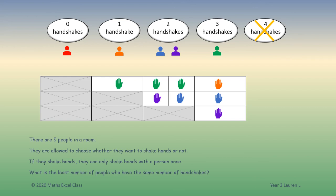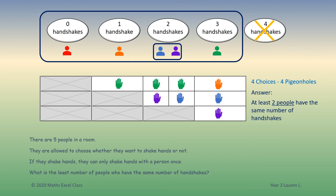This proves that as we have four choices, at least two people need to be in the same pigeonhole.